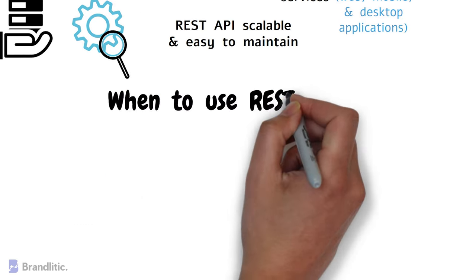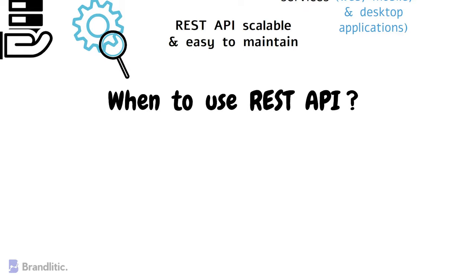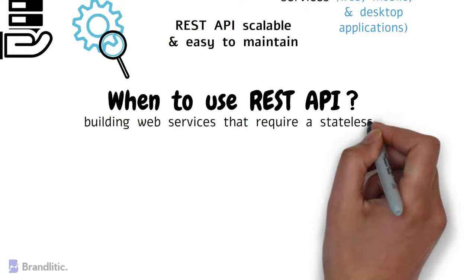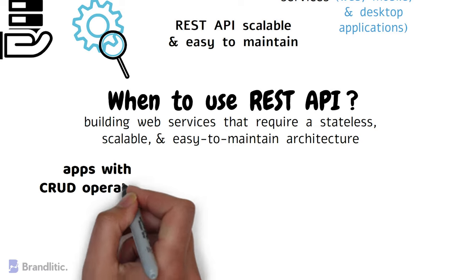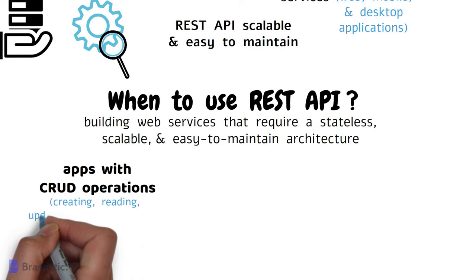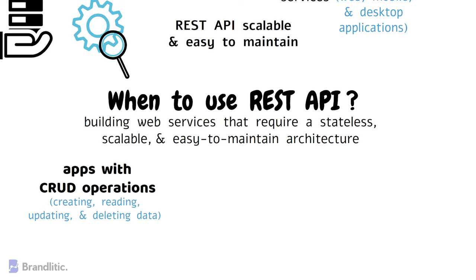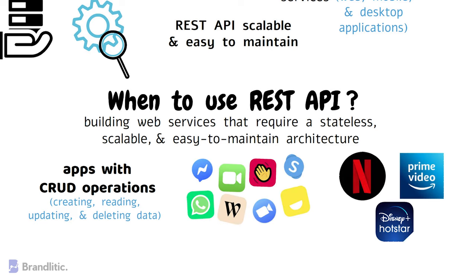When to use REST API? REST API is an excellent choice when building web services that require a stateless, scalable, and easy-to-maintain architecture. It's ideal for building applications that require CRUD operations such as creating, reading, updating, and deleting data. REST API is also suitable for building applications that require real-time communication, such as chat applications and streaming services.